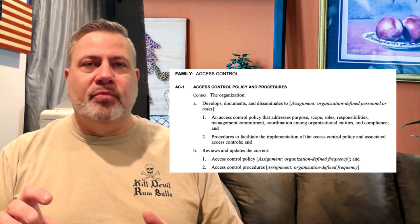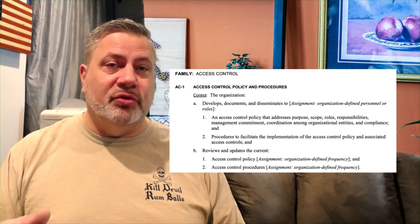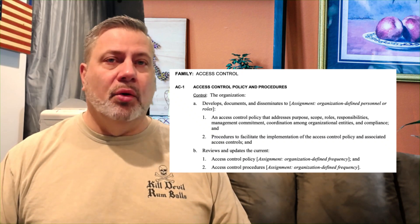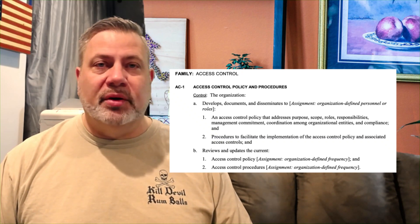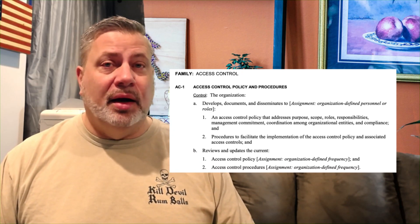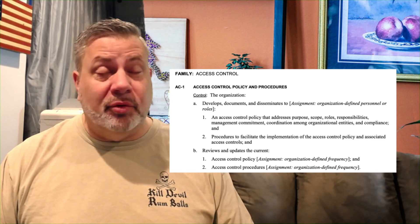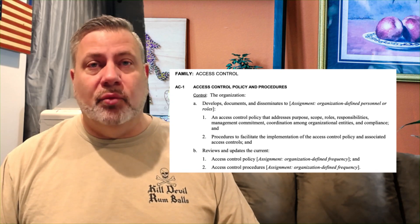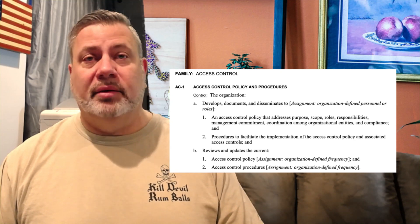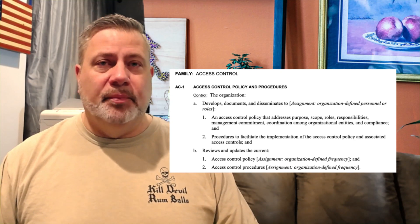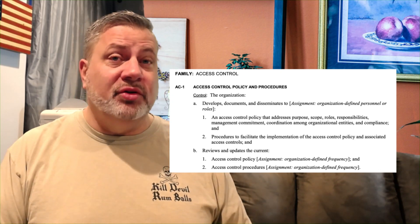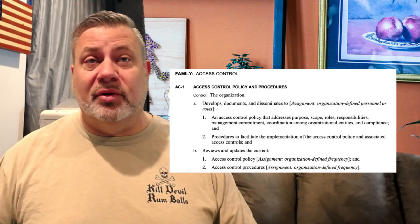Each of those pieces can lead you to fail this control if you're going through an assessment or an audit. First, what's the purpose of the document? That could be as simple as: this document will define the policy around access control at Acme Corp. The next part is the scope — is it organization-wide, business unit-wide, or just a geographical location? Then roles and responsibilities could be tied together: the CSO is responsible for something, your information system security officers are responsible for something, and end users are responsible for something.